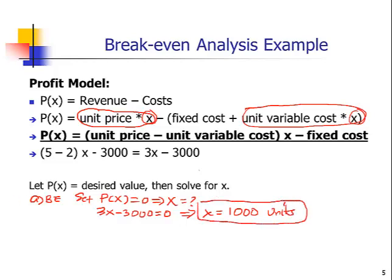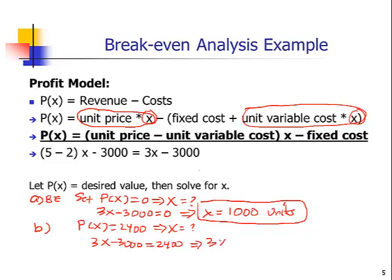Here is our answer to the first question. The second question was: what does it take to make a profit of $2,400? We set 3X − 3,000 = 2,400, so 3X = 5,400, and dividing both sides by 3 gives us X = 1,800. So 1,800 units need to be produced in order to make a profit of $2,400.